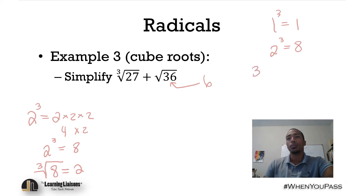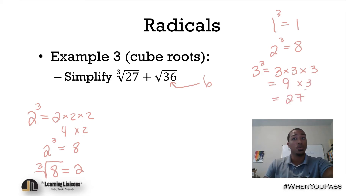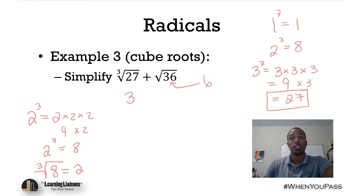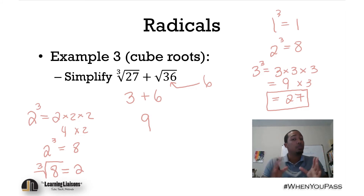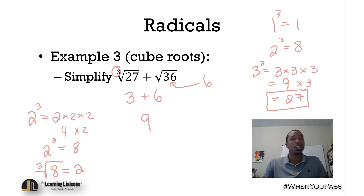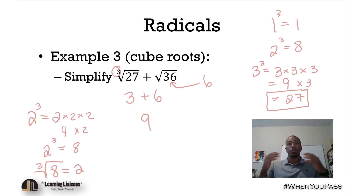So the cubed root of 27 is 3 and the square root of 36 is 6, giving us an answer of 9. One important misconception to address: cube root does not mean divide by 3. If you divided 27 by 3 you'd get 9 for that term, then add 6 and get 15 — which is wrong. The correct answer is 9. Make sure we don't make that crucial mistake.